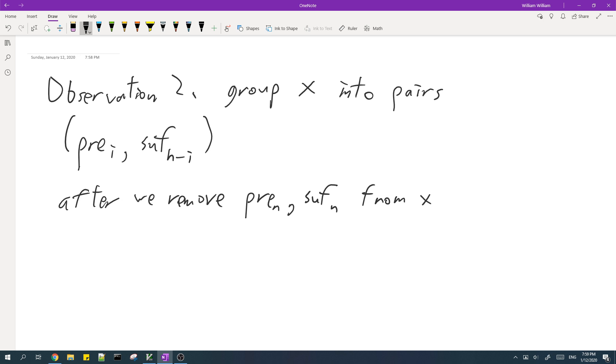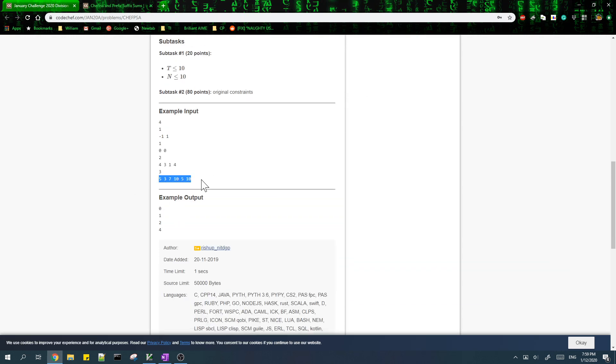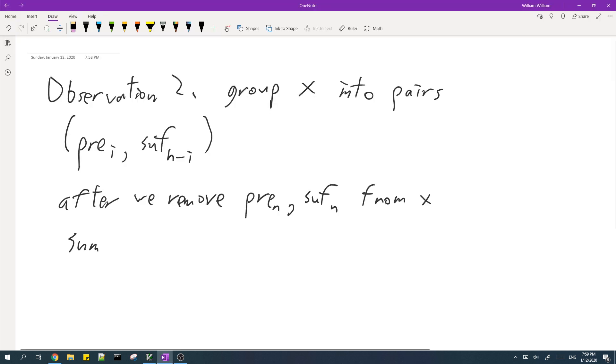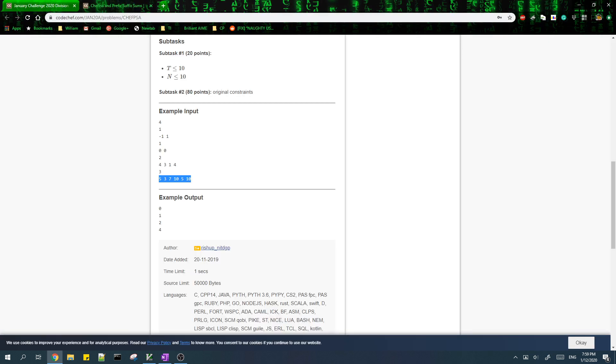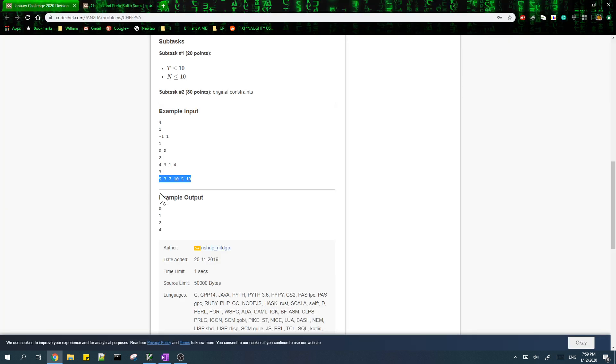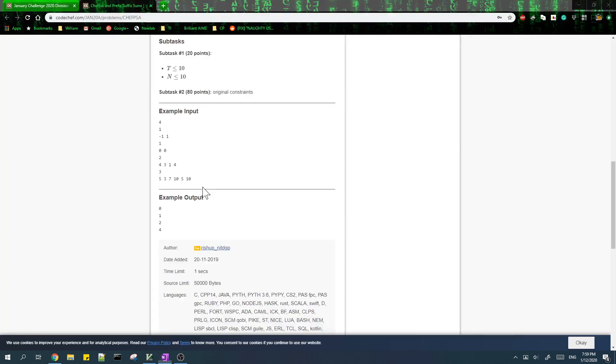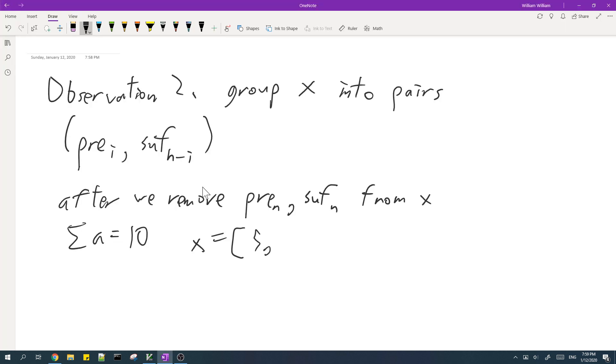So for example, in the fourth test case here, we can find that the sum of a is equal to 10. So after we remove a prefix of n and suffix of n, both of which are 10 from x, we end up with x having 5, 3, 7, and 5.